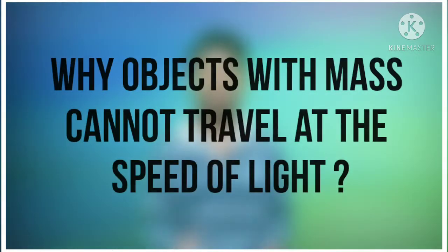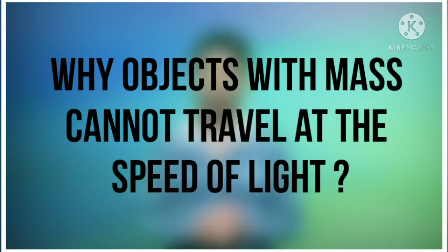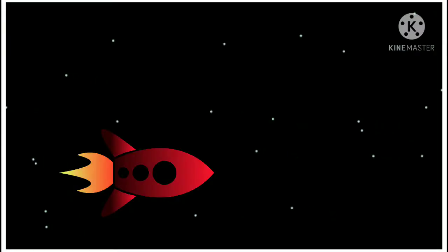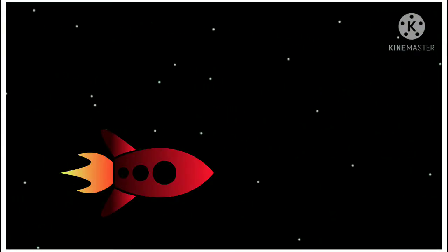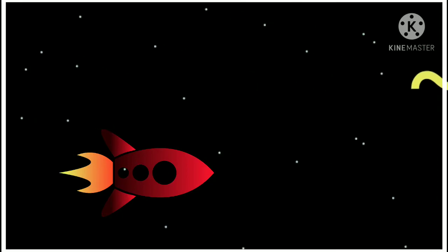Hello everyone. I am Priyansh and today in this video I am going to talk about why objects with mass cannot travel at the speed of light. You may have heard that nothing in our universe can travel faster than light, but objects with mass cannot even travel at the speed of light.